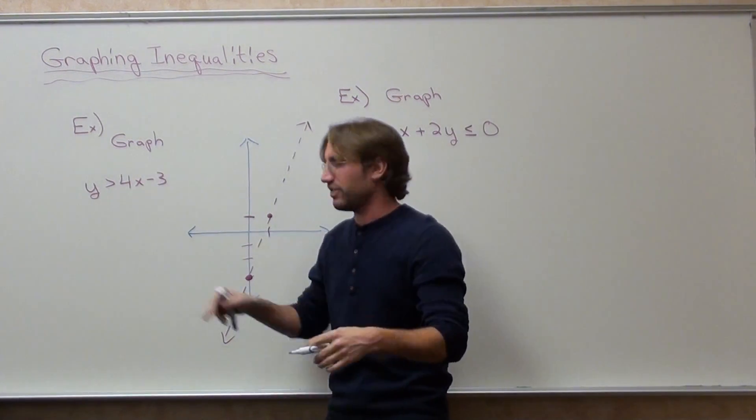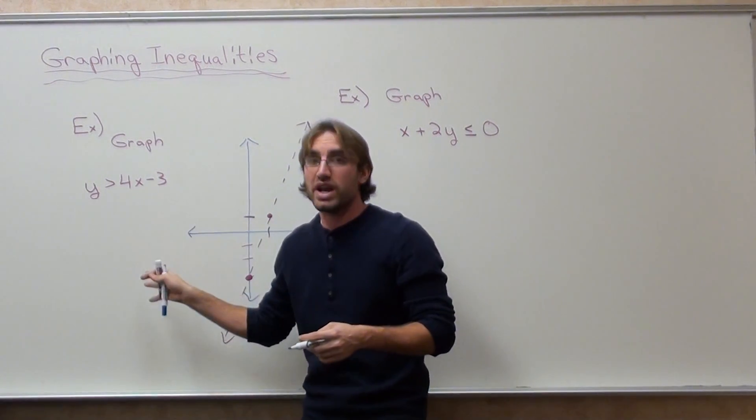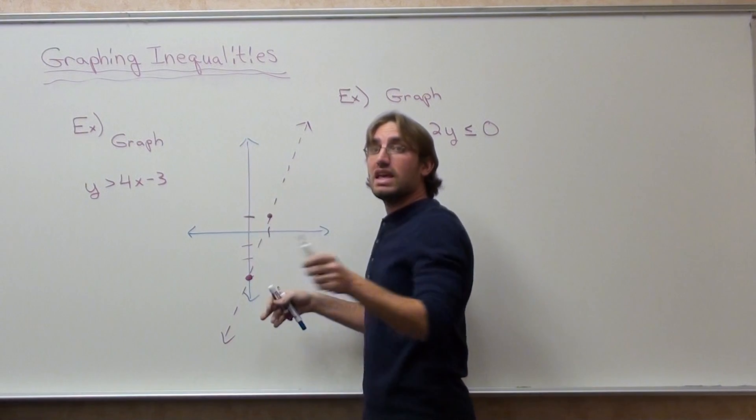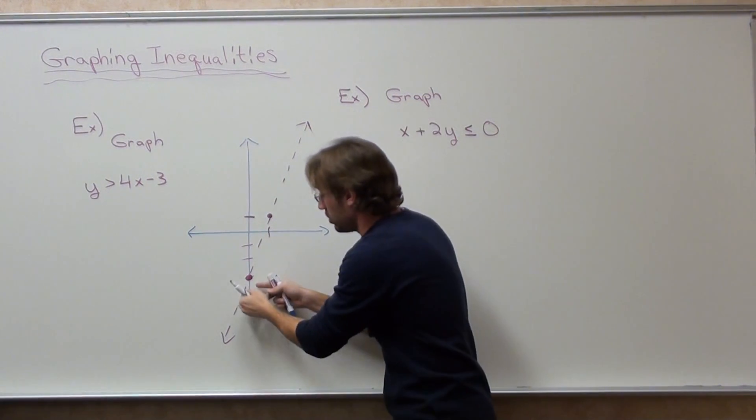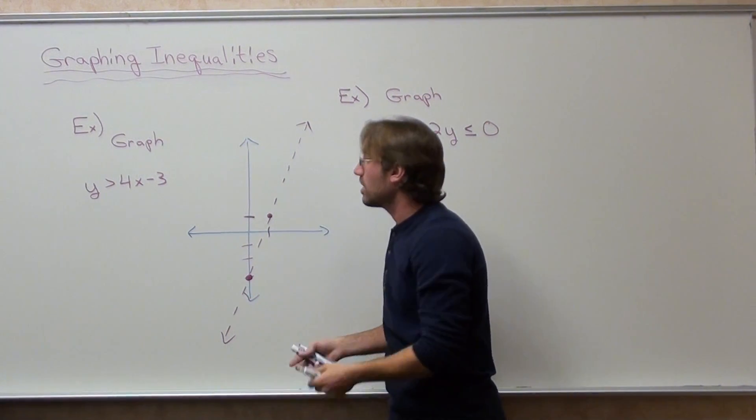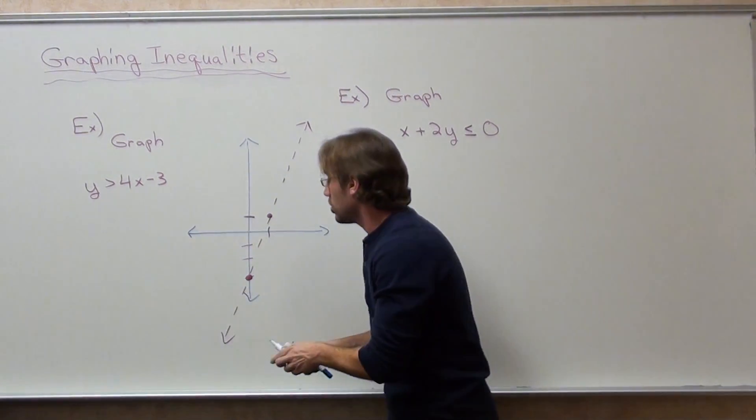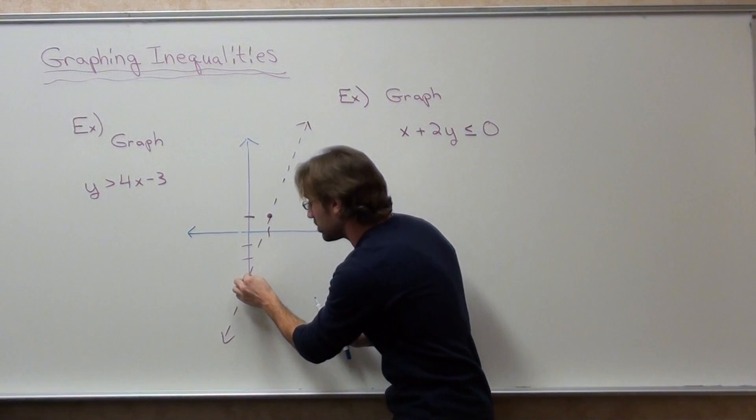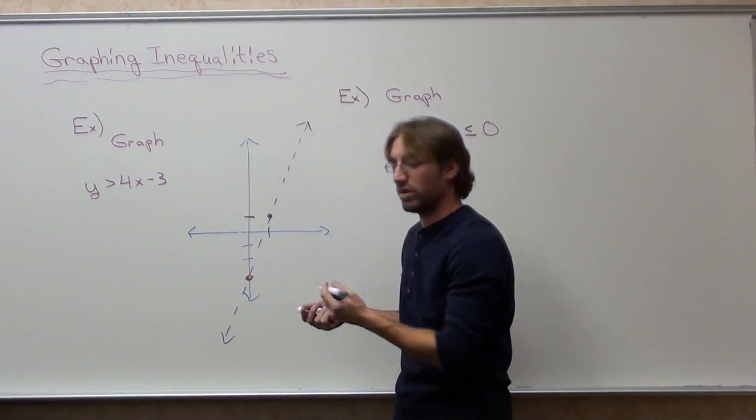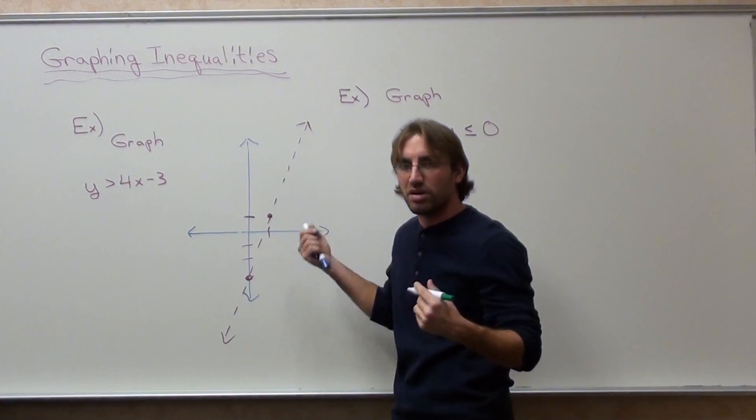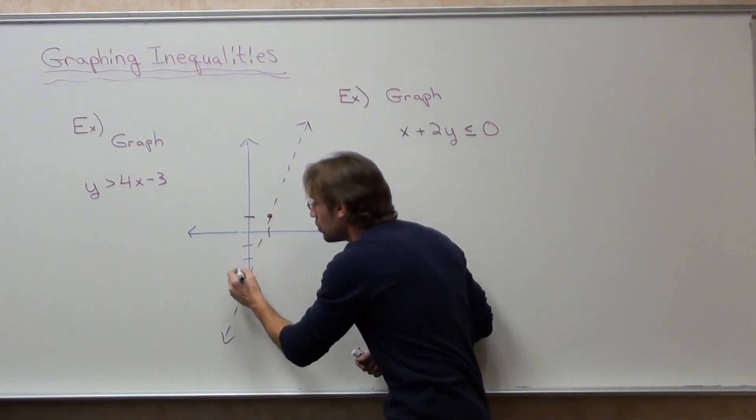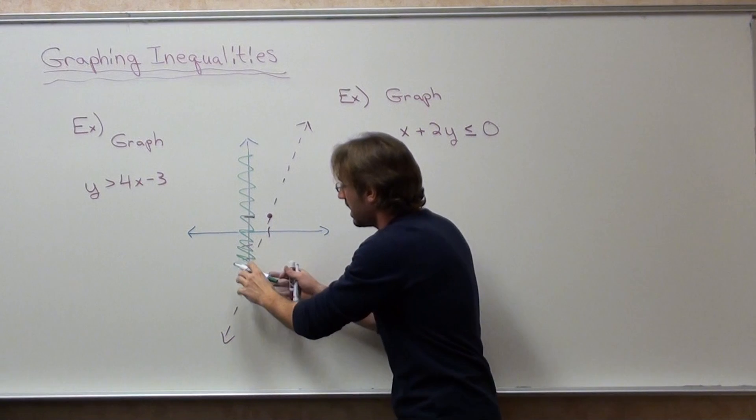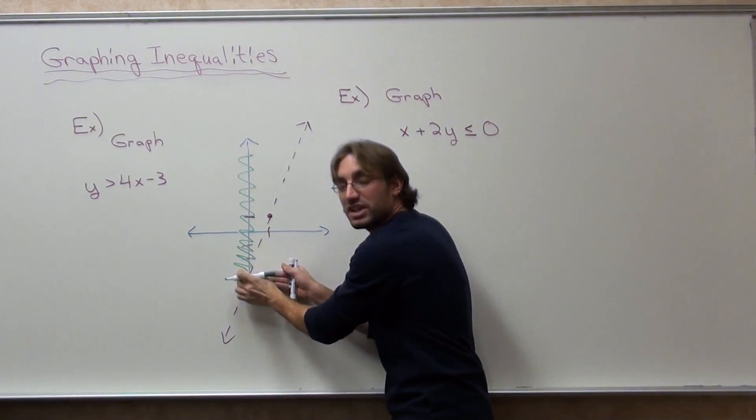What I like doing instead is this: when you get y by itself and it's on the left-hand side, if it's greater than, it means you shade to the north. If it's less than, you shade to the south. This one is greater than, so we're going to shade north of the line, anything north of this line where the y-intercept is. It's shading everything north of this point right here.